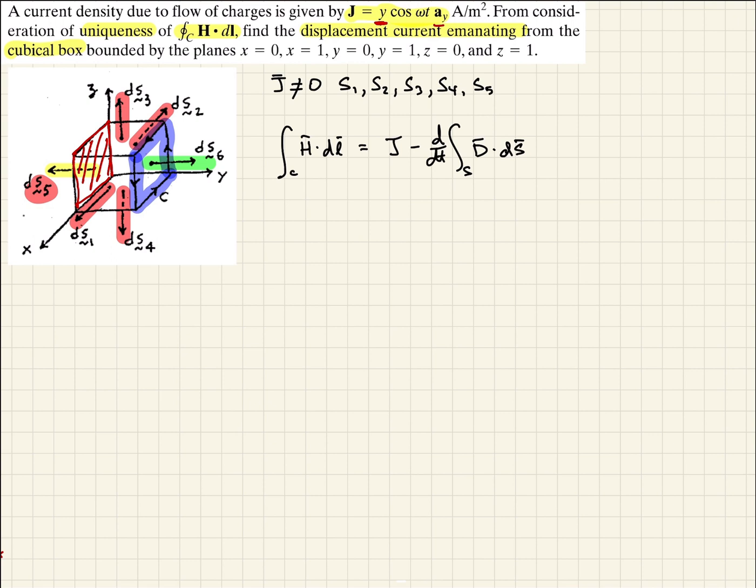So we've already noted that for 1 through 5, current density is equal to 0.